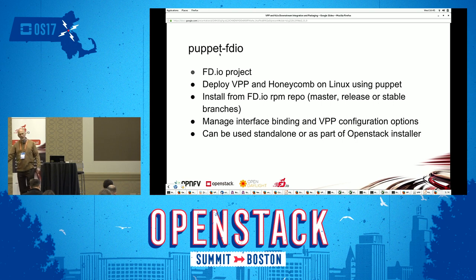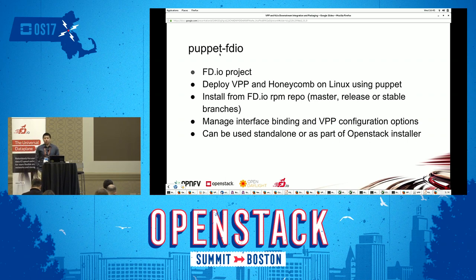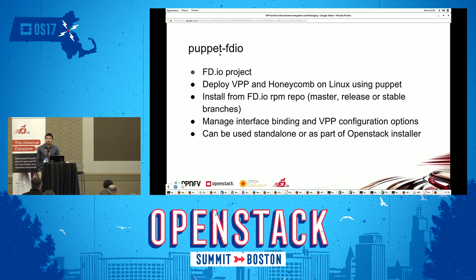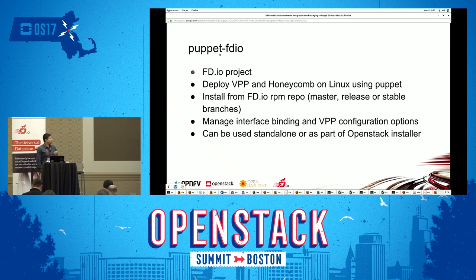Now I'm going to turn it over to Fong, who will talk about orchestration. I'm going to go over basically how we deploy the FDIO projects now that we have everything packaged. We're going to talk about two different ways: one is in a standalone sort of environment, and also in OpenStack. First is Puppet FDIO, which is a project that lives in FDIO. It will deploy FDIO projects like VPP and Honeycomb in Linux. It is written in Puppet, as its name suggests.